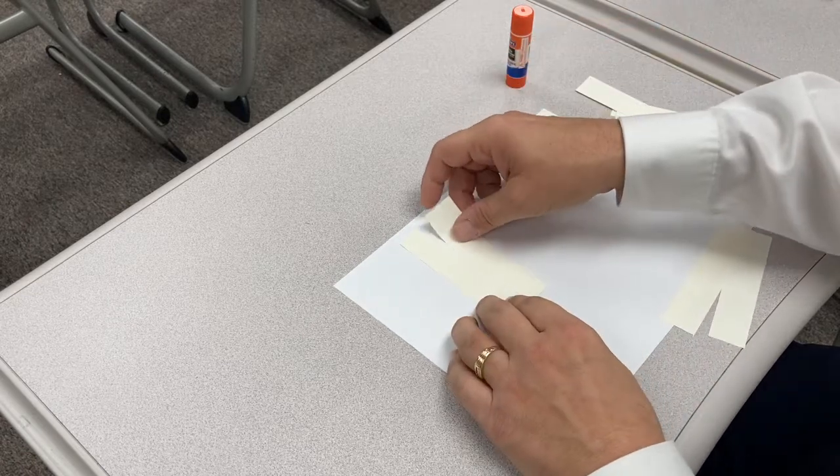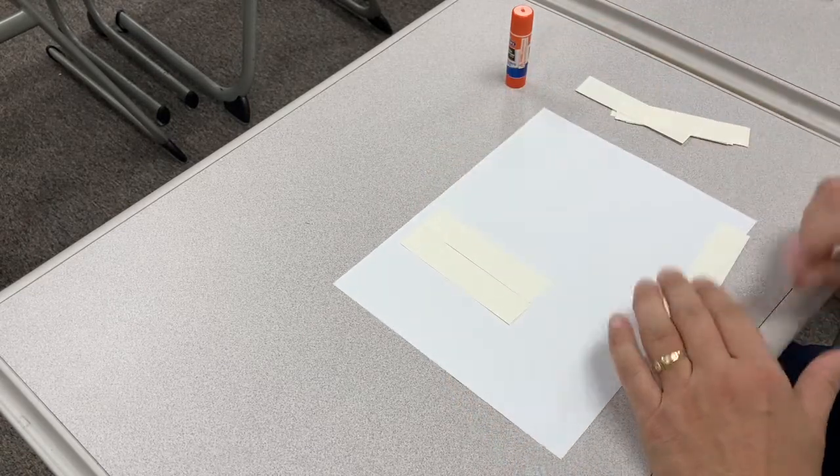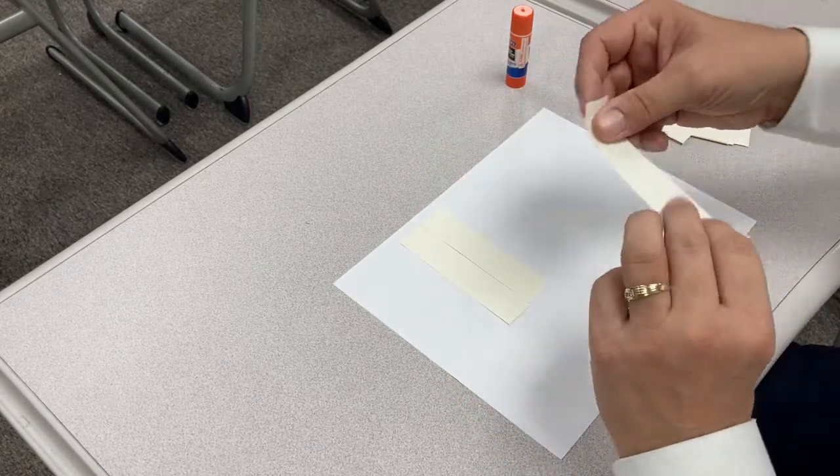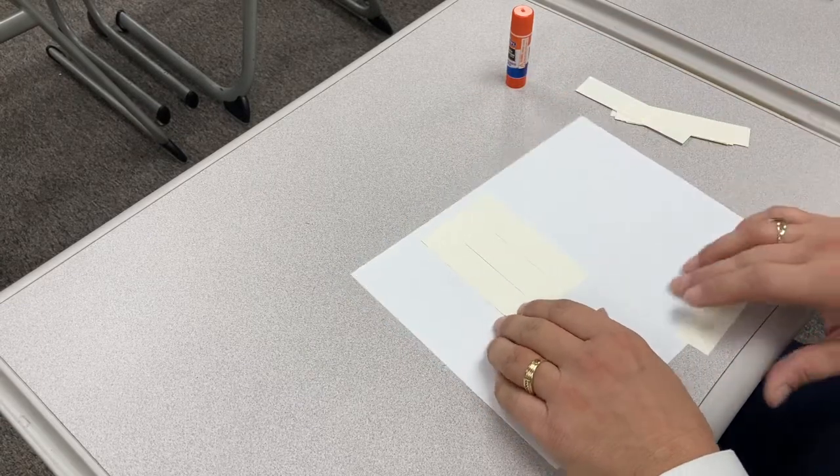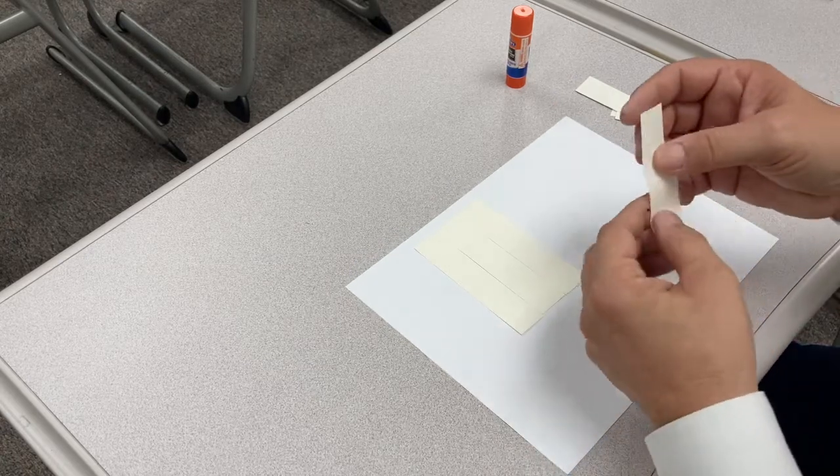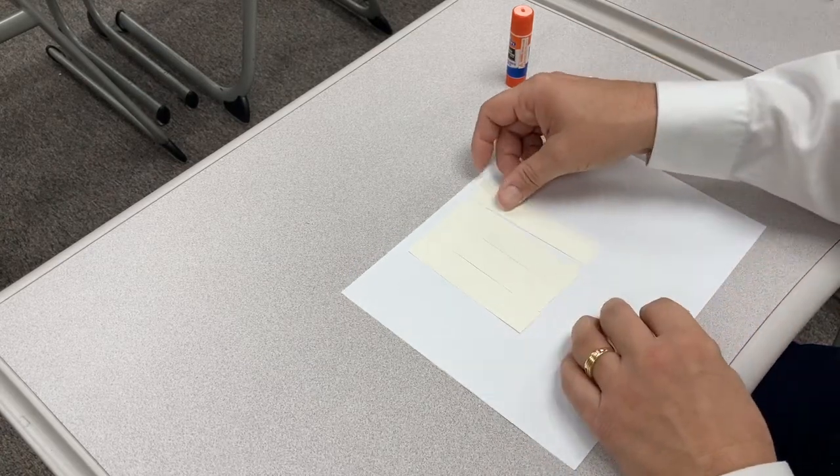So again, four strips, one, two, three, and four with the textured side down. So there we've got our four strips with the textured side down.